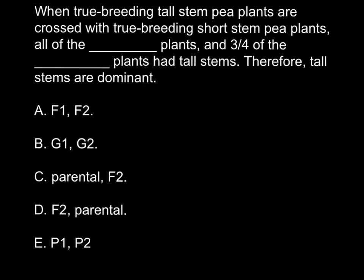We already have a hint that dominant plants are tall varieties, so we can use capital A capital A to designate such plants, and for short stemmed plants we may use small a small a. We have to cross them — this is a monohybrid cross.